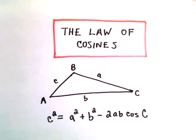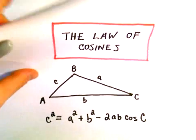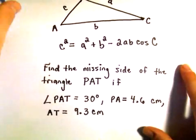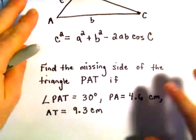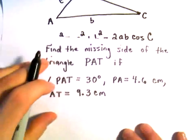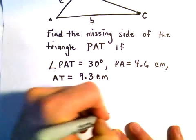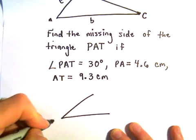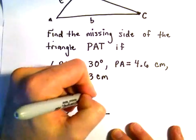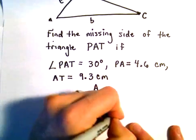Let's do a straightforward example here. We're going to find the missing side of the triangle PAT. I'm going to make a little picture. So let's call this P, we'll call this A, and the other one we'll call T.